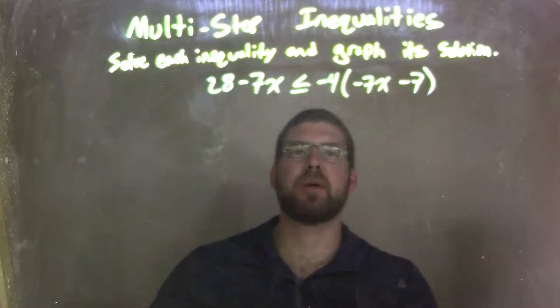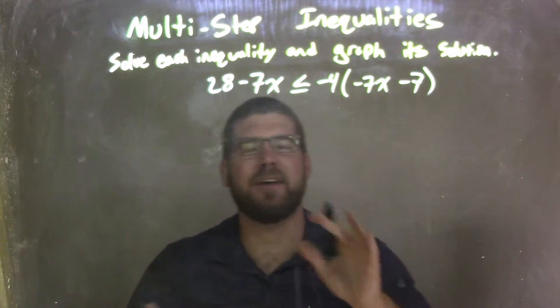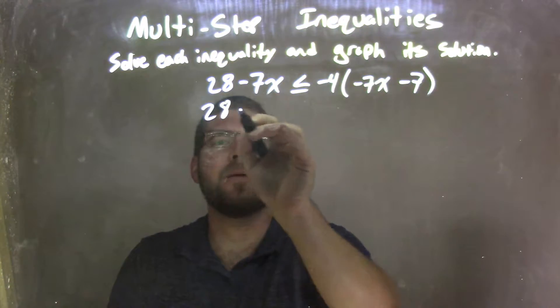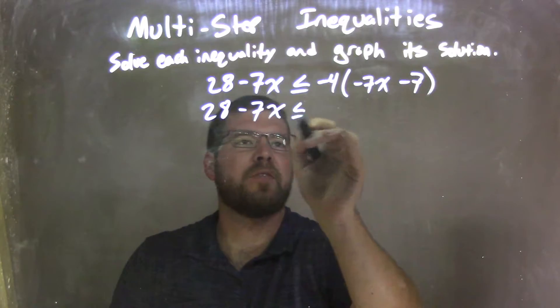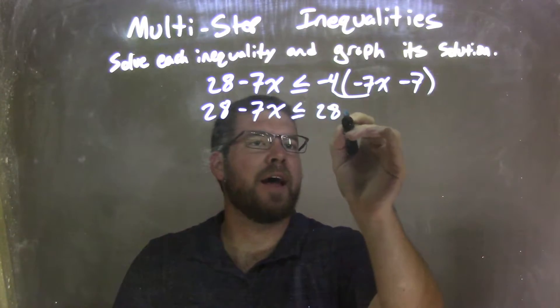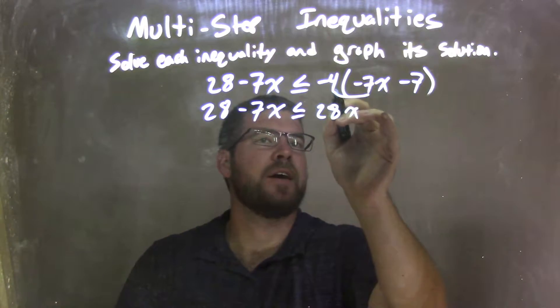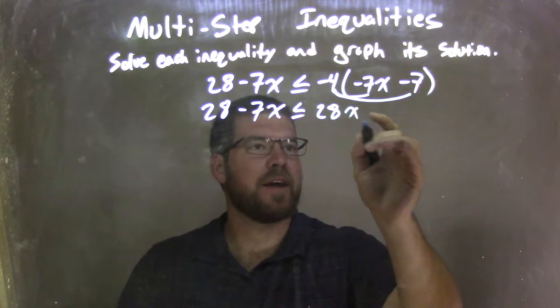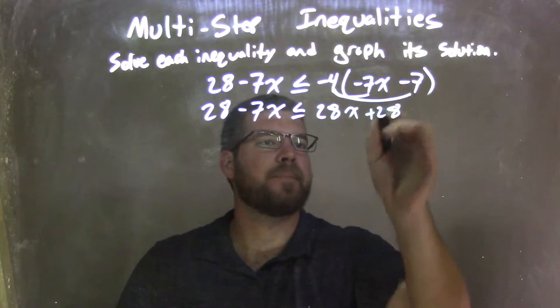Well, my first step is I'm going to distribute the negative 4. So we have 28 minus 7x is less than or equal to, negative 4 times negative 7x is a positive 28x, because a negative times a negative is a positive. And negative 4 times negative 7, again, is a positive 28.